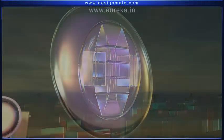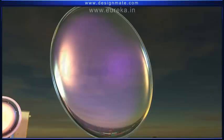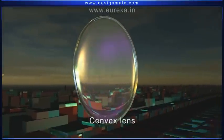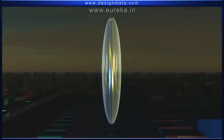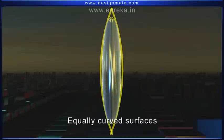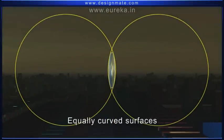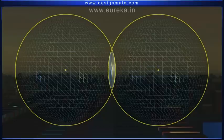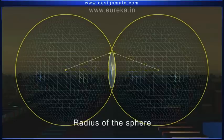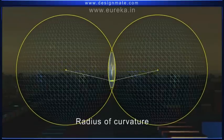A single piece of glass formed in this fashion is called a convex lens. We can consider these equally curved surfaces of the lens to be small parts of spheres. The center of these spheres is called the center of curvature of the lens. The radius of the spheres is known as the radius of curvature of the lens.